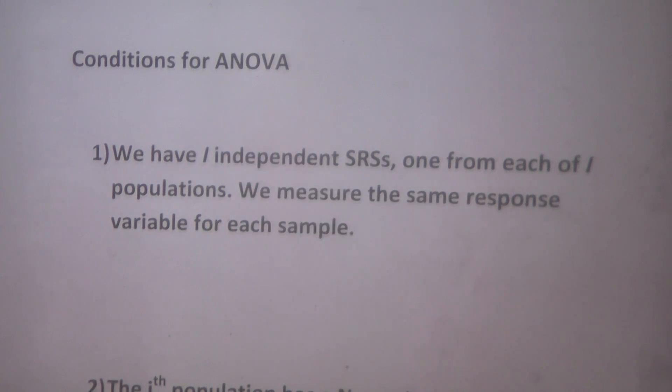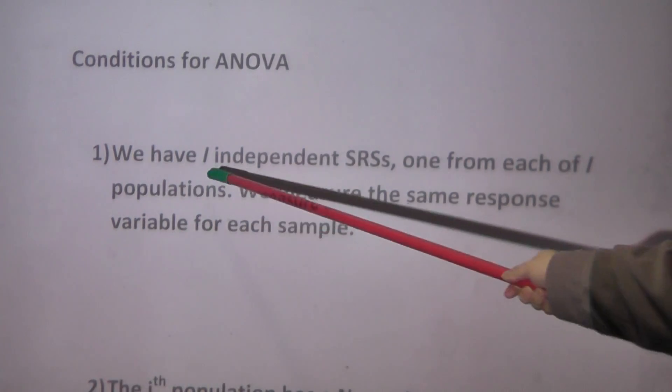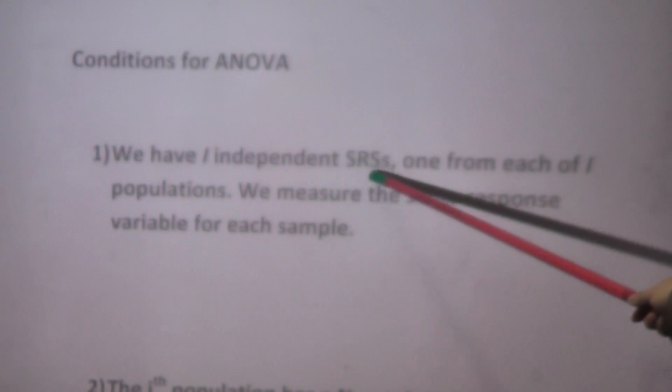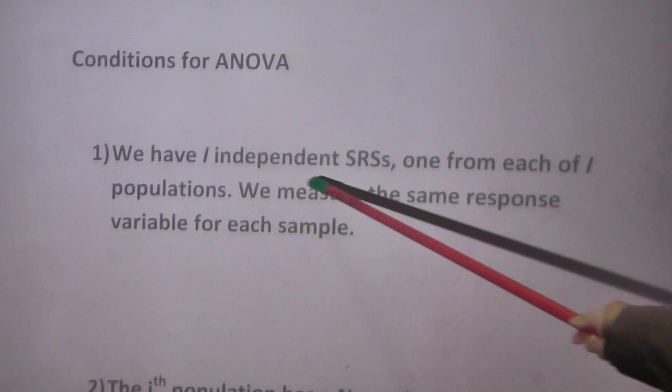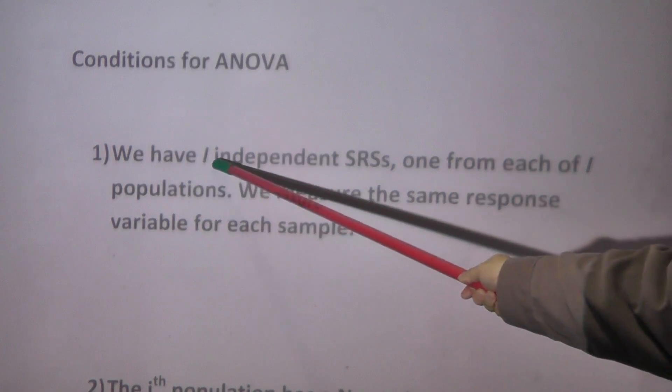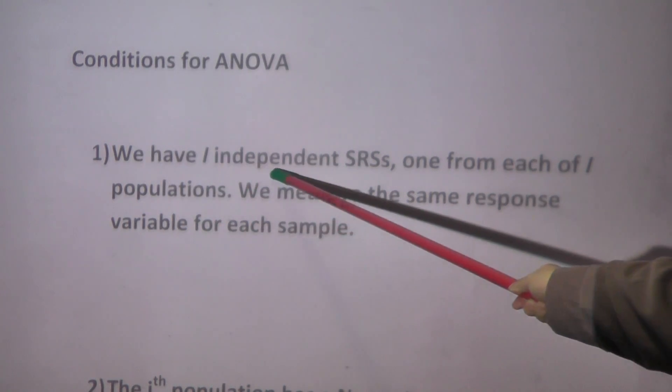One, we assume we have I independent simple random samples, one from each of I populations. Now, be very careful, we have an independence assumption here.